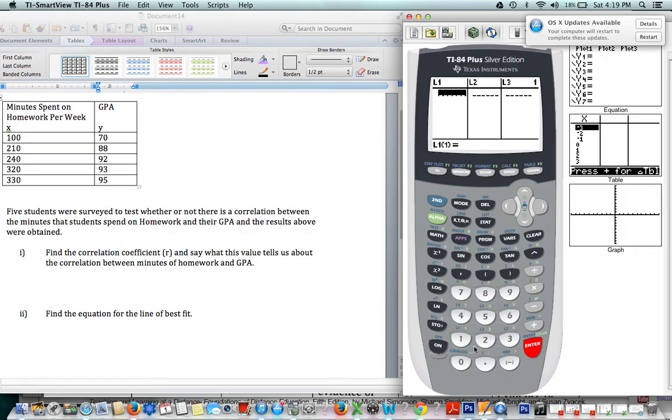Okay, so now we're ready to put in our values, and in L1, we'll put our X values. So we have 100 first, and we have 210, and 240. My 1 is blacked out. Let's hope we don't need that. 320, and 330. And that's all we have in our L1.